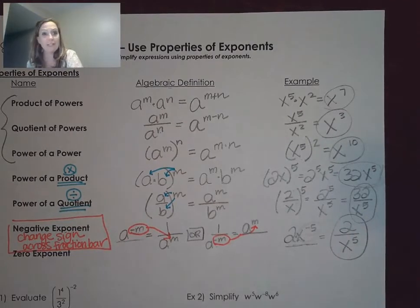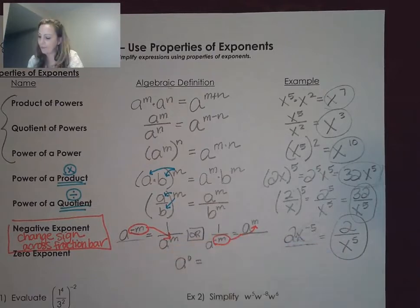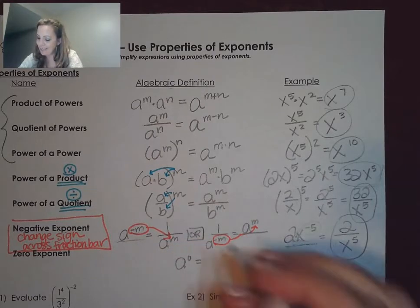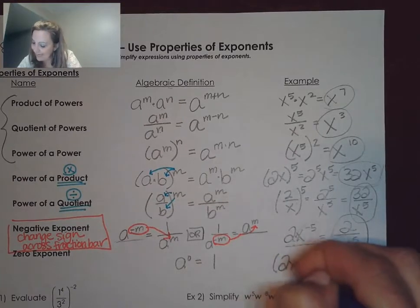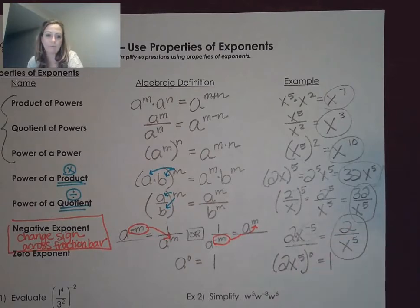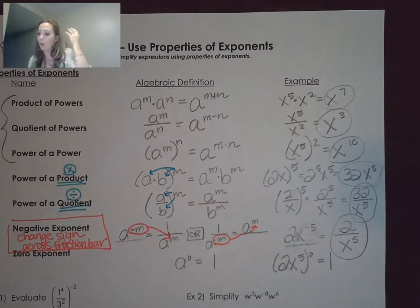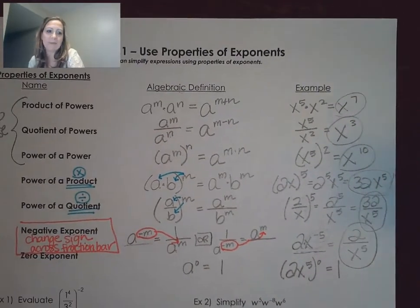Now I can talk about the zero exponent. If I have A to the zero power, A to the zero power is 1. So anytime you have anything to the zero power, that gives you 1 — regardless. You might say, why is that? I'm going to do a real quick demonstration.